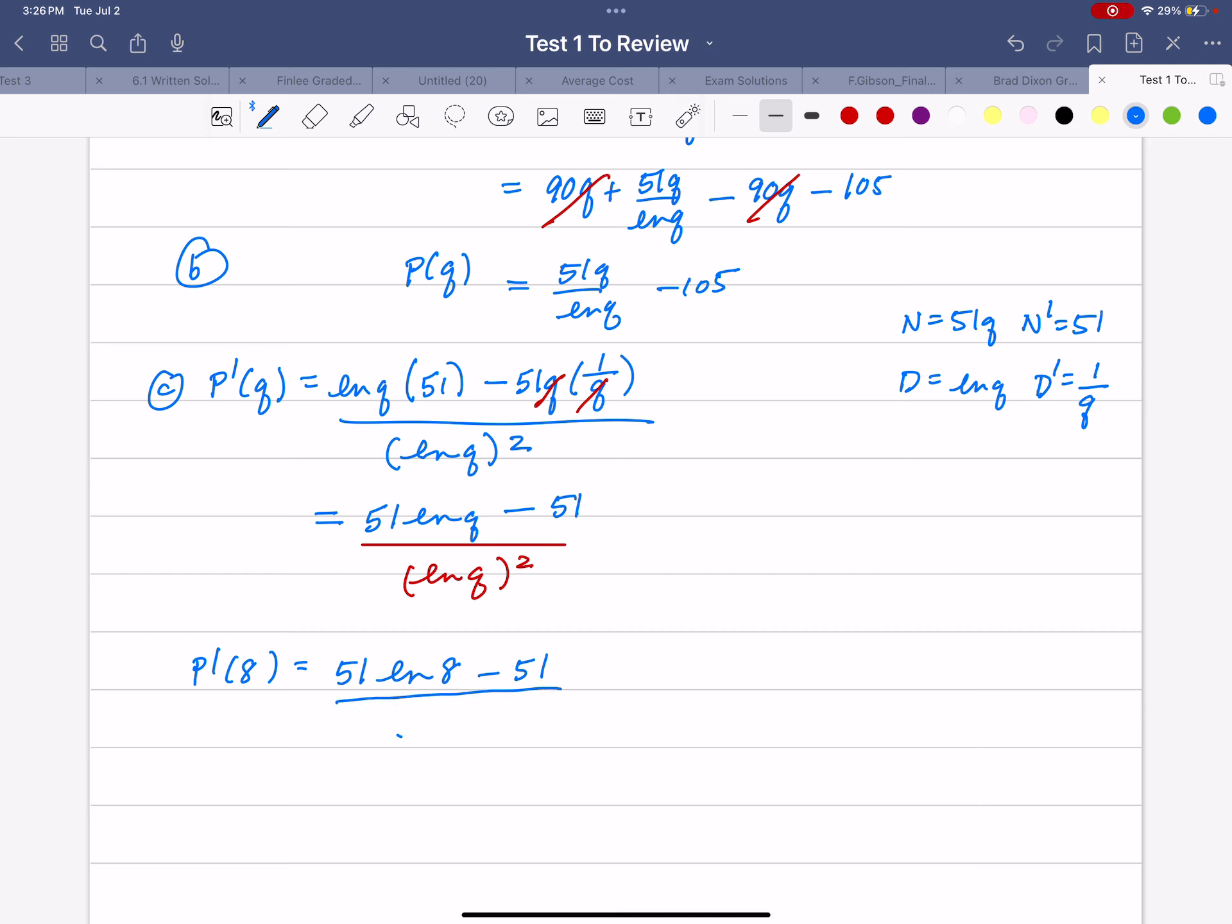divided by the natural log of 8, then squared. Those parentheses are going to be required. I'm going to do my numerator first. Another thing to remember: you need a parenthesis right there. So it's going to be 51 natural log of 8, close parentheses, minus 51.